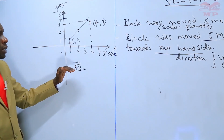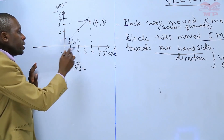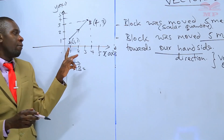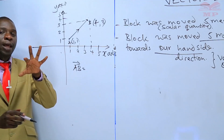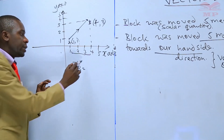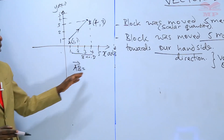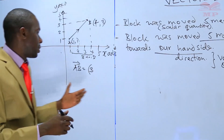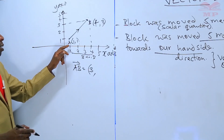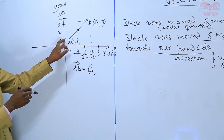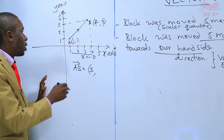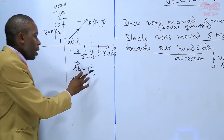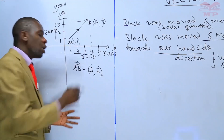Working with these, we can find vector AB by seeing how many units A has been displaced towards B. Looking at the x-axis only, A is at one and B is at four — so the difference is three units. On the y-axis, A is at one and B is at three — so the movement from A to B is two units.